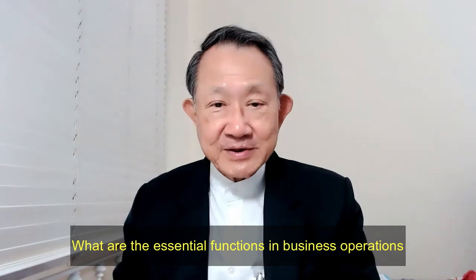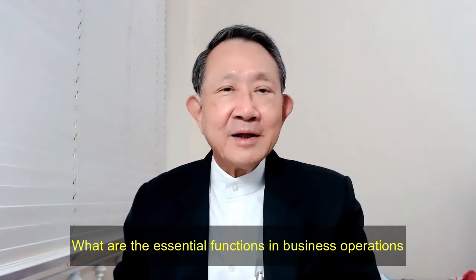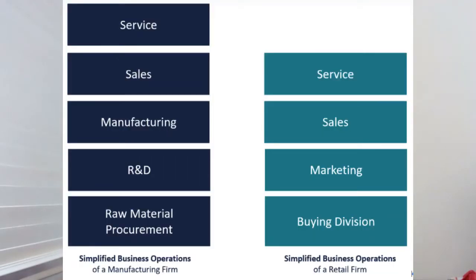What are the essential functions in business operations? The essential functions vary from business to business, but there are also typical functions found in most businesses. Let's look at two categories: manufacturing firms and retail firms. Sales and service are always essential for most businesses, however manufacturing and research and development could be typical for manufacturing firms but not for others. Raw material procurement to manufacturing firms is equivalent to buying of merchandise to retail firms. Business operations are different for different industries.